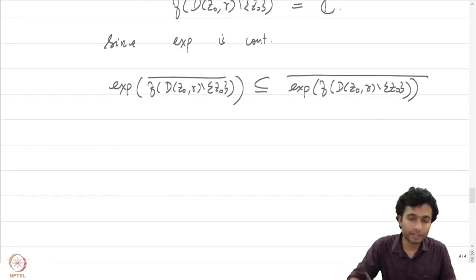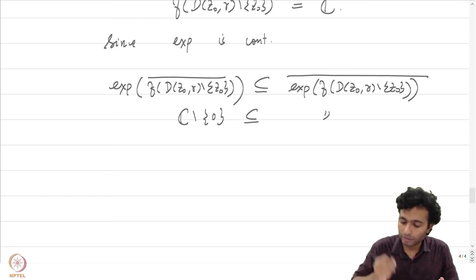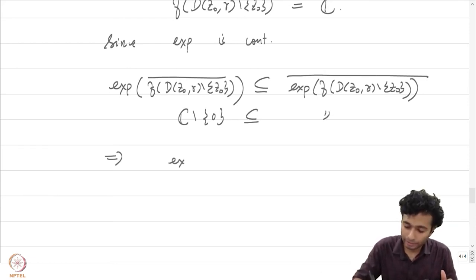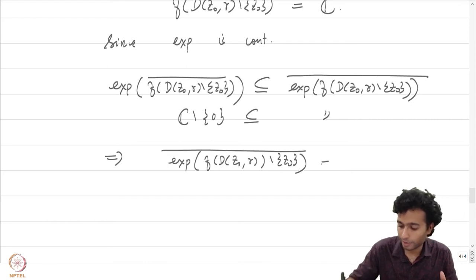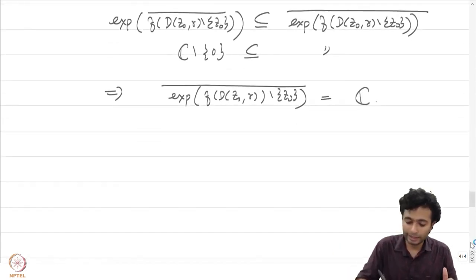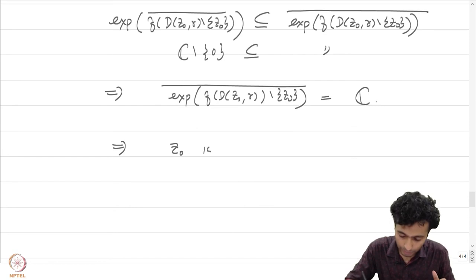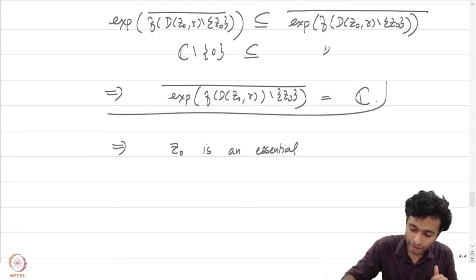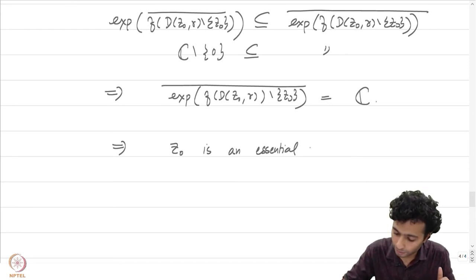By the Casorati-Weierstrass theorem, f(D(z₀, r) minus {z₀}) is dense in ℂ, so its closure equals ℂ. Since exp is continuous, exp(f(D(z₀, r) minus {z₀})) closure is contained in exp(f(D(z₀, r) minus {z₀}) closure). Therefore ℂ* ⊆ this closed set, which means exp(f(D(z₀, r) minus {z₀})) closure equals ℂ. This condition cannot hold if z₀ is a removable singularity or a pole, therefore z₀ is going to be an essential singularity of e^f.